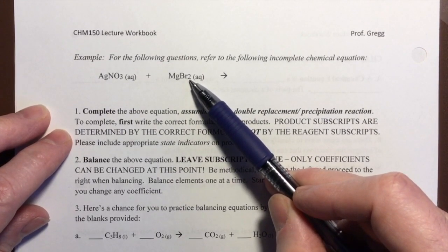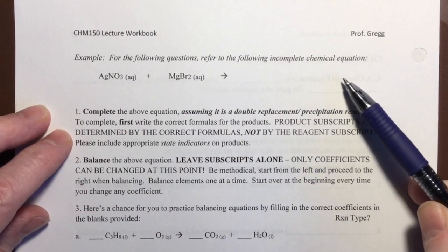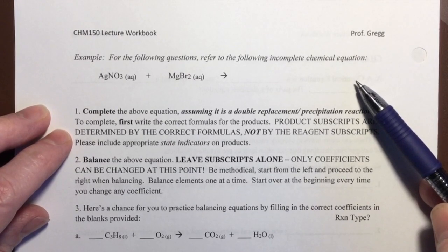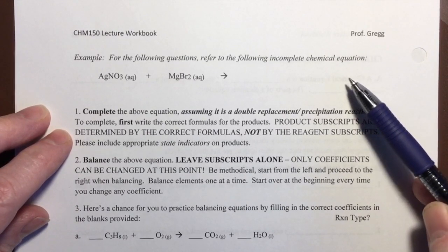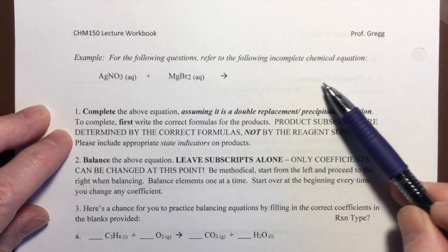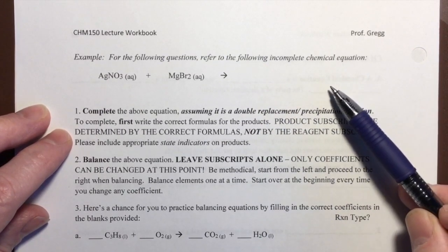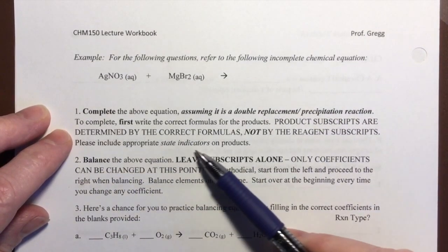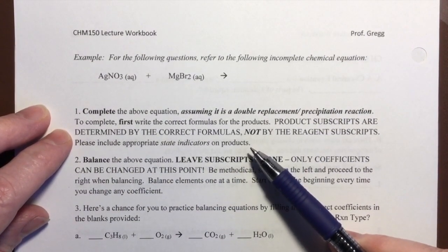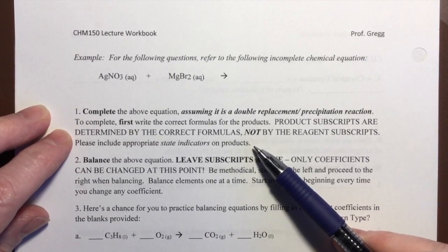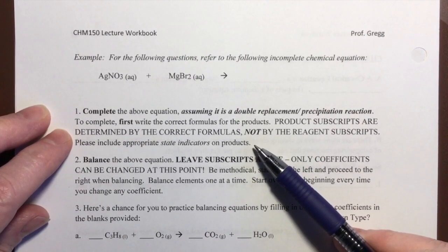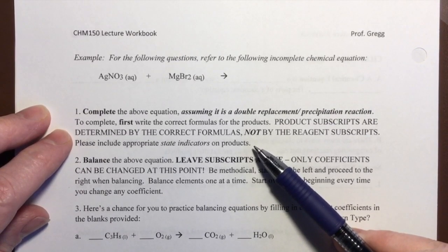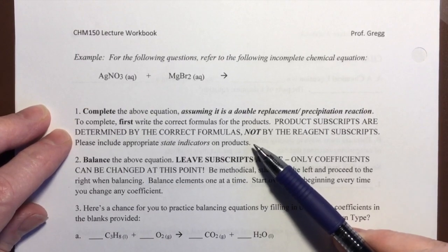It may have a two as a subscript, but it may not. That's going to be determined by the charges on the species and balancing the charges to get the correct formula. Then we're going to include the appropriate state indicators on the products. And the way we do that is we look at solubility, and we will discuss solubility rules later. For now, I'll just tell you what is soluble and what is not soluble. So here we go. We're going to complete the equation.